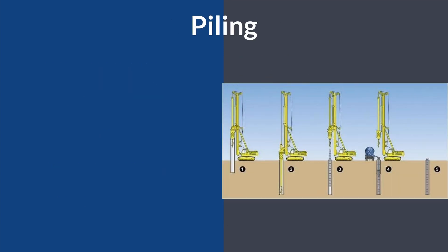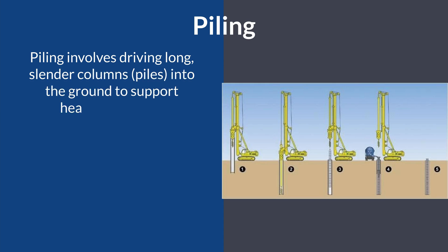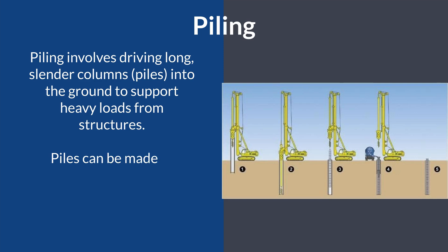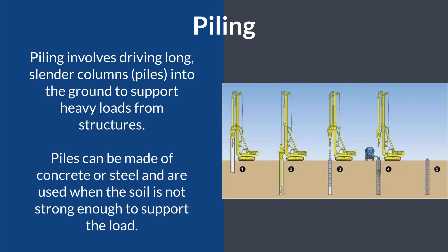Number eight: piling. Piling involves driving long, slender columns or piles into the ground to support heavy loads from structures. Piles can be made of concrete or steel and are used when soil is not strong enough to support the load.